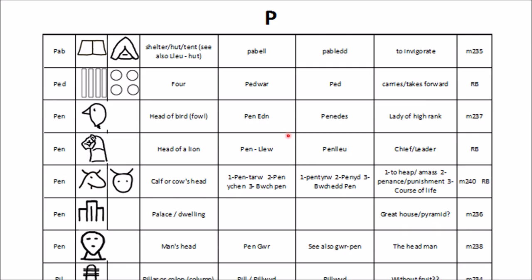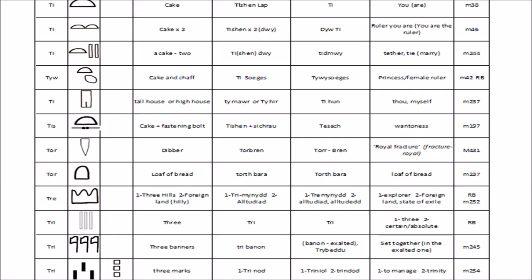Now we're going to do another one here. One of the followers of the work and a fan of the site is Peter. So we're going to try to do Peter. So what you would do if you want to do your own name, you grab the dictionary. There's loads of P's — here's the first few. And pick one you fancy. So probably look at this column — you've got all the English words. In this case we've got 'chief' or 'leader,' which is quite cool. And you've got the drawing of a lion's head, which again is very cool. So let's go with that.